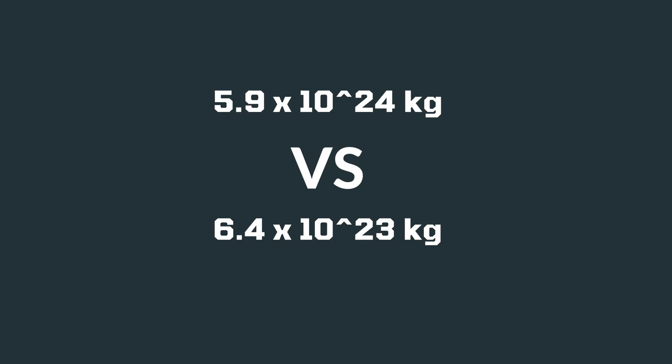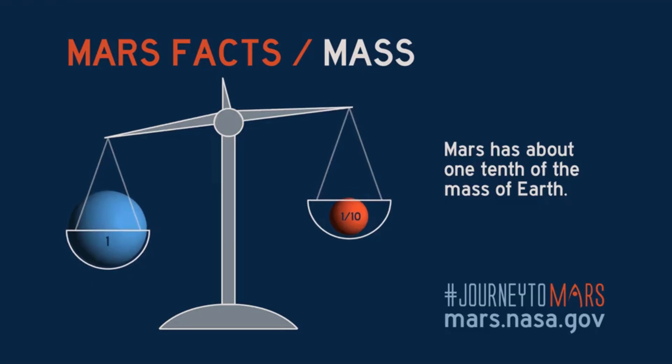Number four: Mass. The mass of Earth is 5.9 × 10²⁴ kilograms, while that of Mars is 6.4 × 10²³ kilograms. It is approximately one-tenth the mass of Earth.